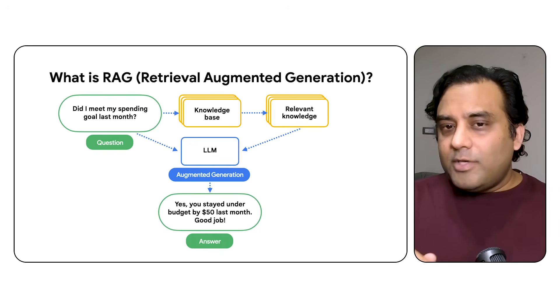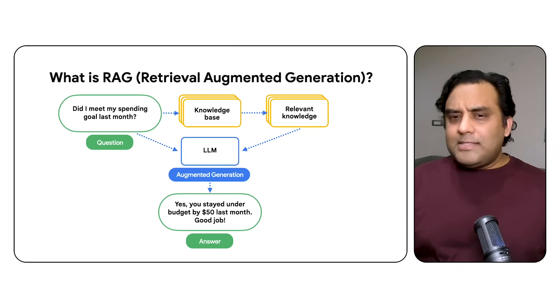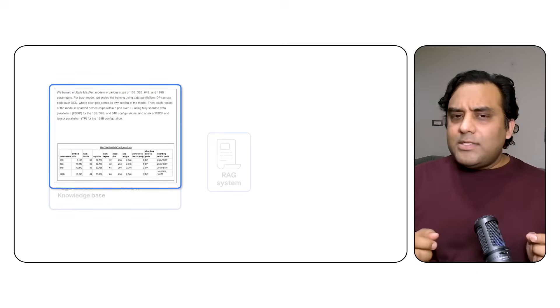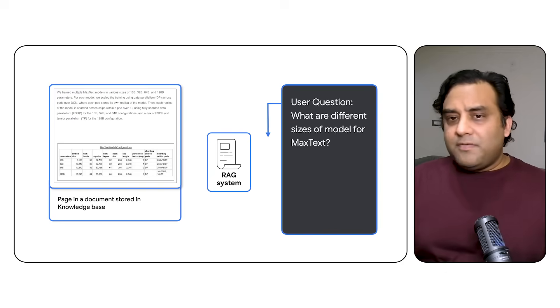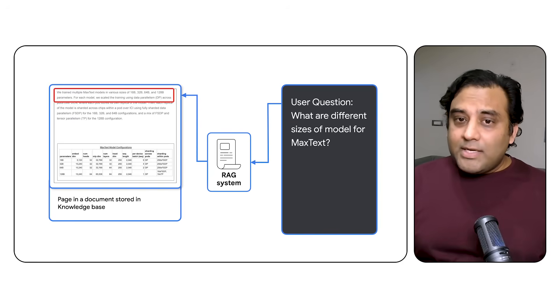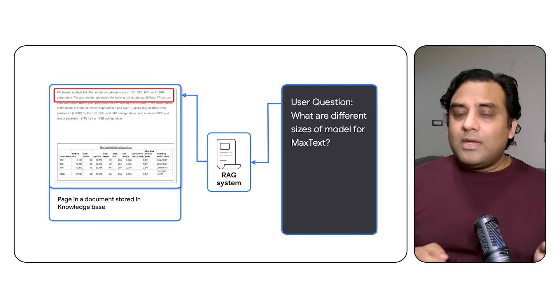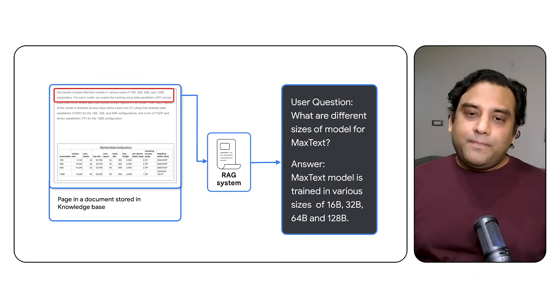The key is that the information being queried should be present in the knowledge base. Let's take a simple example: imagine you have a blog and you have a question about different configurations for different kinds of training. A simple RAG system would index all the text data from the blog, find the relevant information, and generate an answer. Now you might be wondering how this whole system works — what are the various components that make the magic happen? Let's explore.